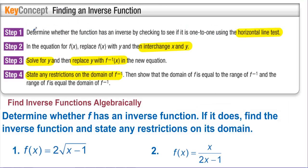Finding an inverse function. Step one: determine whether the function has an inverse by checking if it's one-to-one using the horizontal line test. In the equation for f(x), replace f(x) with y, then interchange x and y — in other words, switch x and y. Solve for y, then replace y with f-inverse of x in the new equation. State any restrictions on the domain of f-inverse.